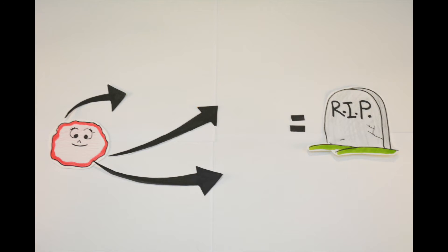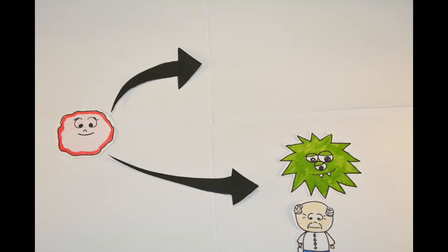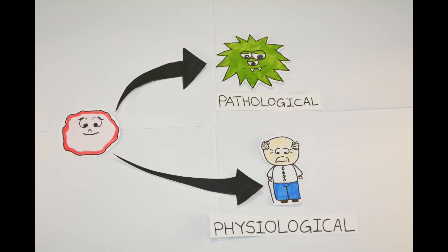But if the stimuli wasn't strong, the cell can adapt to a new steady state and will return to the normal condition as soon as the stimuli is removed. The stimulus could be physiological or pathological. Physiological stimuli is a normal process and not harmful, like aging, while pathological stimuli is abnormal, like bacterial infection.